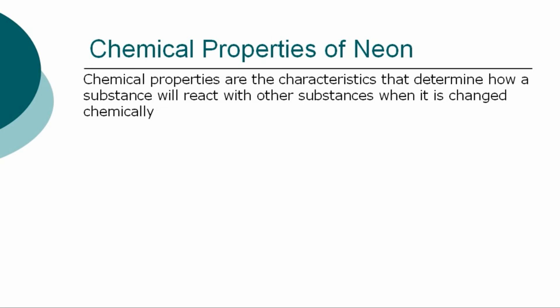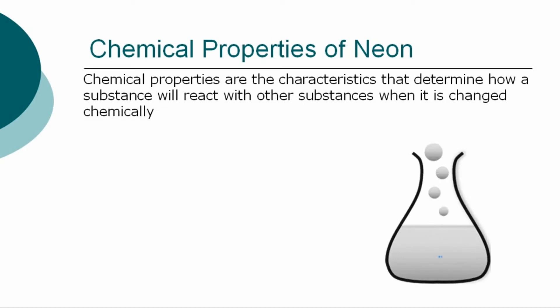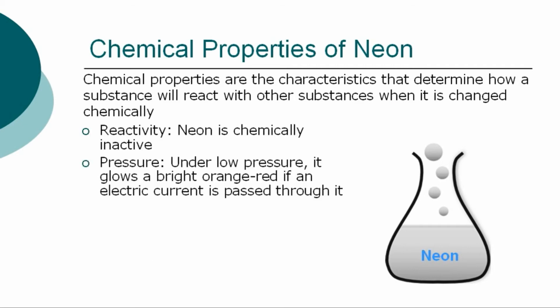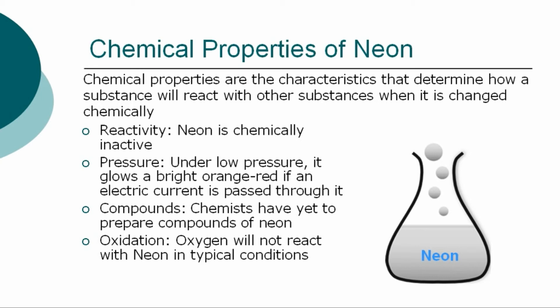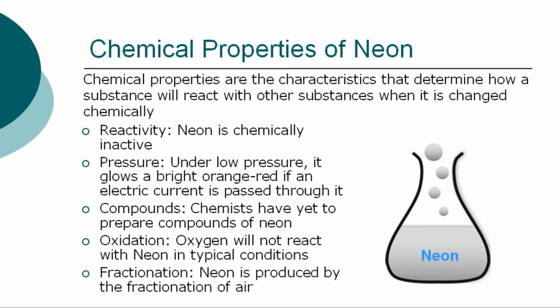The chemical properties are the characteristics that determine how neon will react with other substances when it is changed chemically. The chemical properties of neon are: reactivity — neon is chemically inactive; pressure — under low pressure, it glows a bright orange-red if an electric current has passed through it; compounds — chemists have yet to prepare compounds of neon; oxidation — oxygen will not react with neon in typical conditions; fractionation — neon is produced by the fractionation of air.